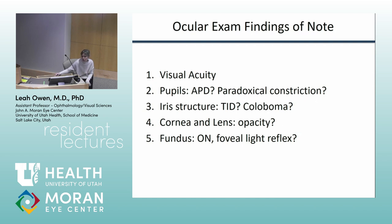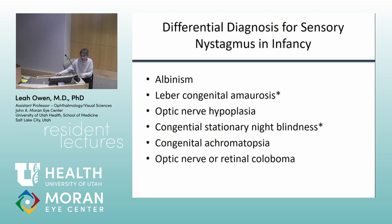Look for transillumination defects in the iris, which can indicate albinism, and assess for foveal hypoplasia. Check the light reflex and consider whether something is blocking their vision causing them to develop nystagmus. Albinism presents with eyes that look fairly normal except for absence of the foveal light reflex. Another common cause is optic nerve hypoplasia — those are probably the biggest most common reasons, though other causes exist.